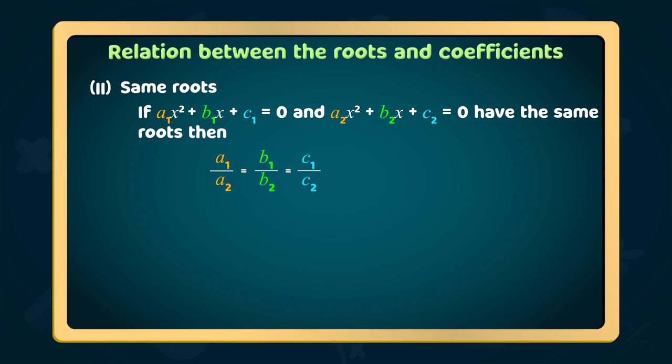Thus, the coefficients of the quadratic equations of x² term, x term, and constants—their ratios are equal respectively.